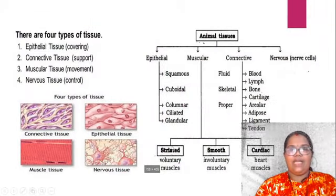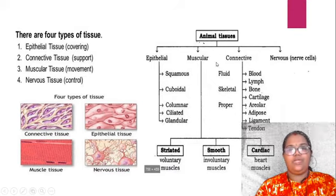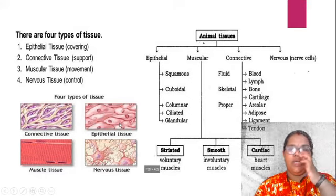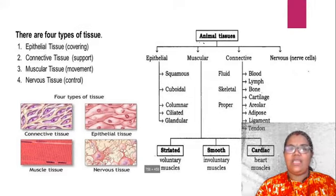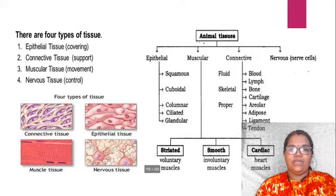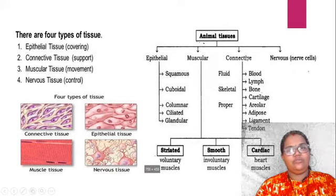This is the overview of animal tissues. You can see that animal tissue is divided into four different parts mainly: epithelial tissue, muscular tissue, connective tissue, and nervous tissue. Epithelial tissue is the covering tissue. It is a flat single-layer tissue, like the epidermis in plants. There will be connective tissue providing support — the connection between all these tissues. Connective tissue includes blood, lymph, bone, and cartilage. We will go into each one in detail.